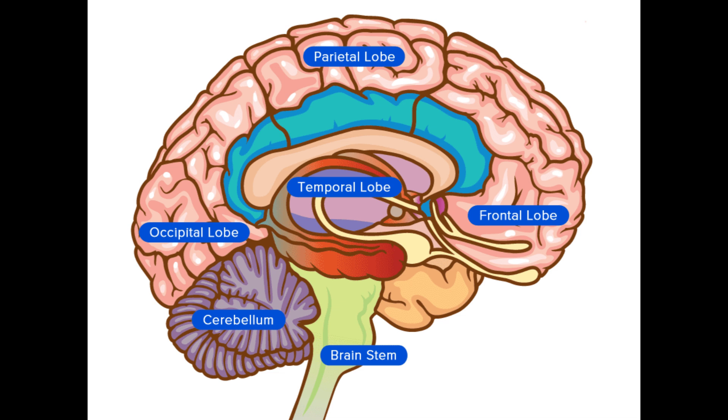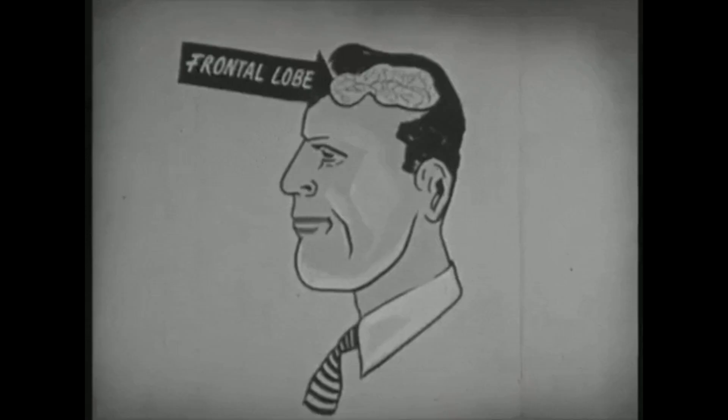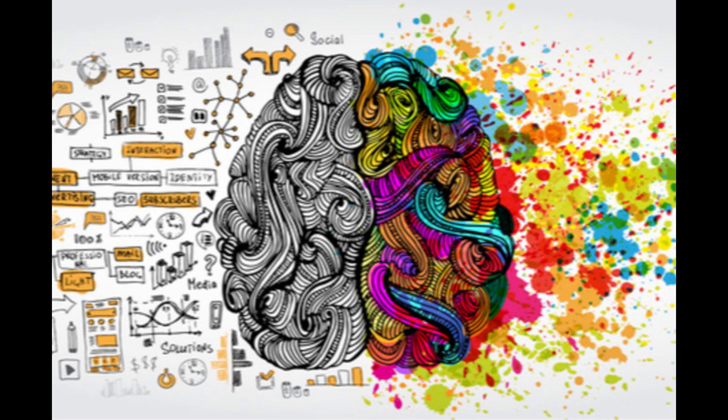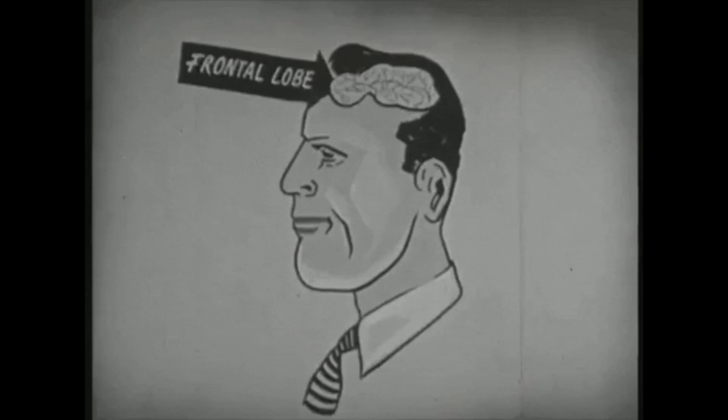Frontal lobe. The frontal lobe is located at the front of the brain and is responsible for higher cognitive functions such as reasoning, problem-solving, and decision-making. It also plays a crucial role in controlling voluntary movement and speech.